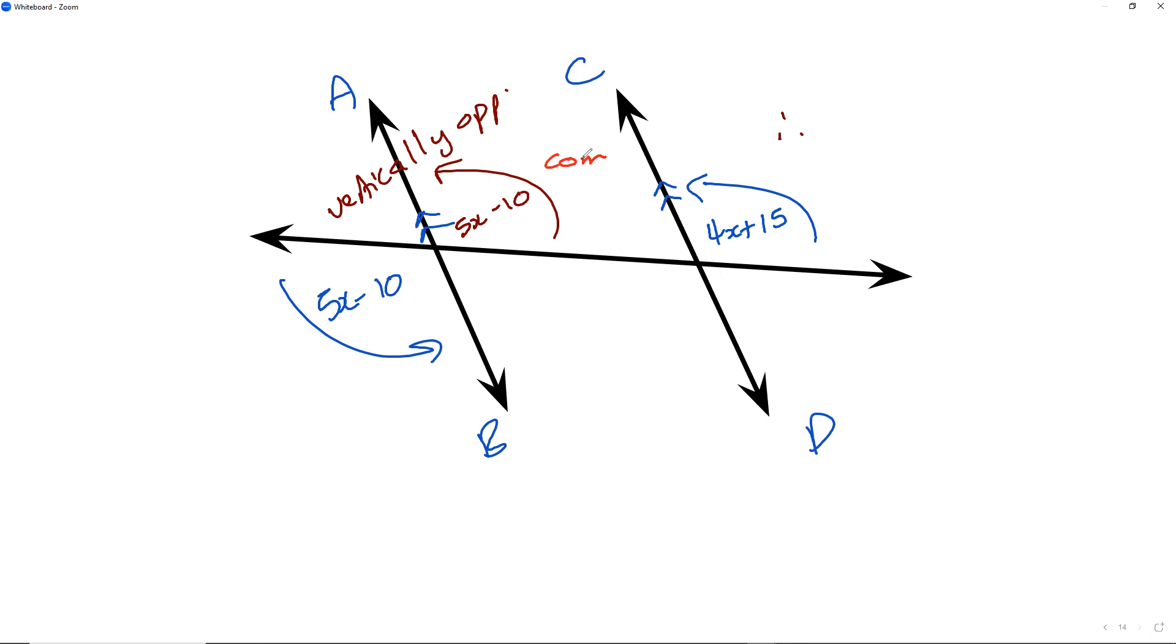So these two are corresponding angles, so I can make them equal. So I take 5x minus 10 and I make it equal to 4x plus 15.